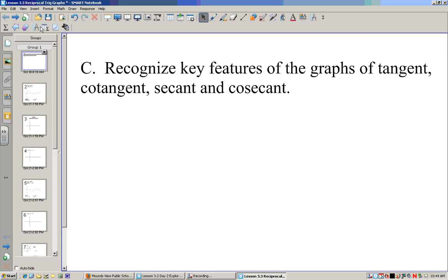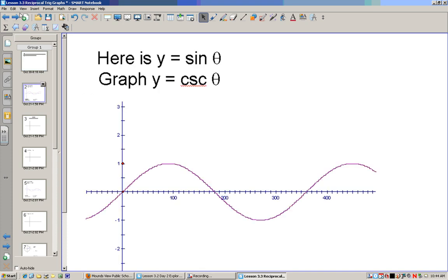So far we've learned how to graph sine and cosine, and now we're going to learn the other four trig ratios. Now we're going to learn how to graph cosecant based on what we know of sine.